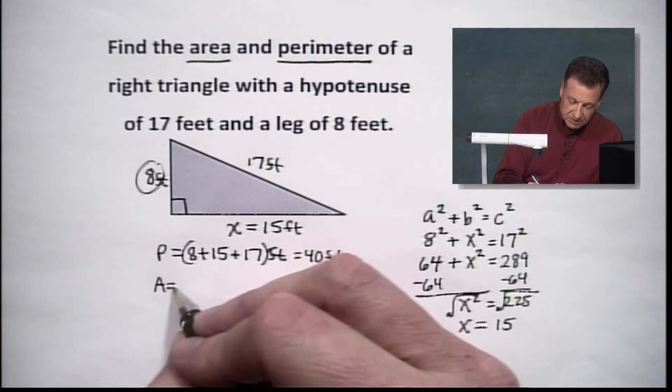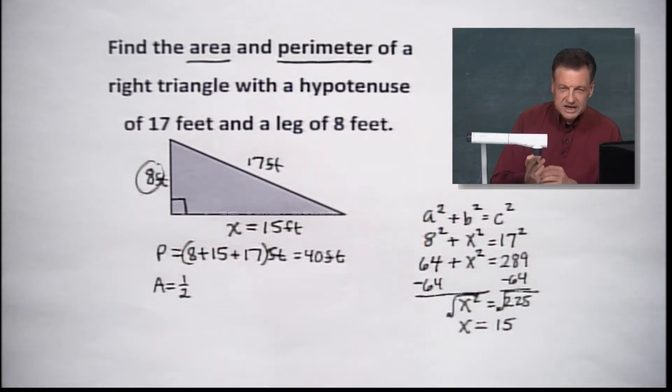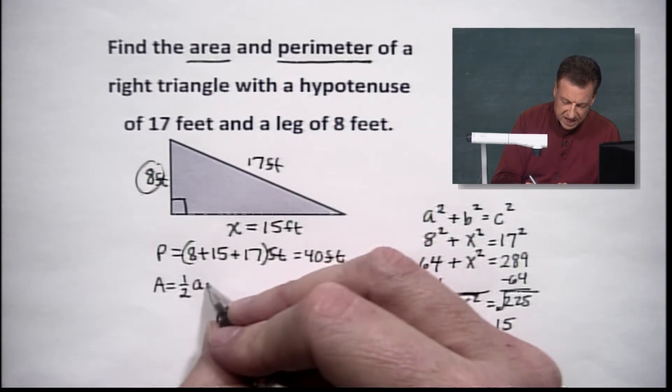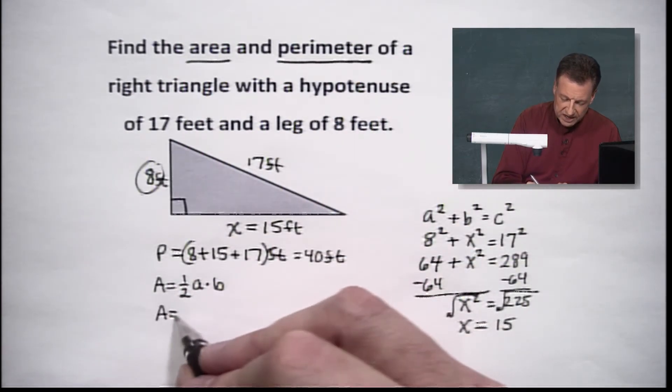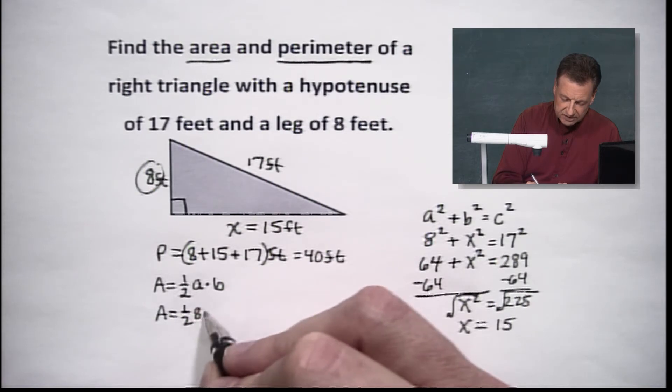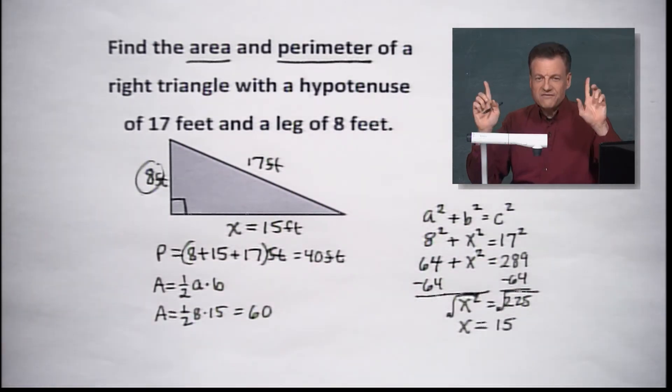Area, remember, it's 1 half. In this case, it's going to be our A times B, our base times altitude, or in this case, our legs, the product of the legs. So I'm going to just put A times B here. We've got 8 and 15. This one's going to be very easy. 1 half of 8 times 15. I'm coming up to 60.